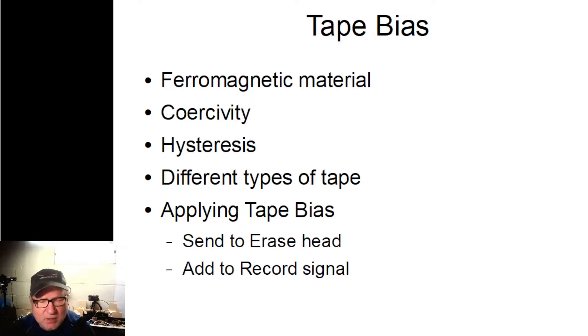First, ferromagnetic material. Recording tape is made up of multiple layers and one of the layers, the topmost layer, is made of ferromagnetic material and all that means is this material can be magnetized and demagnetized. Typically these materials are made out of iron, nickel, chromium or cobalt alloys. The magnitude or measure of the field strength needed to magnetize or demagnetize is called the coercivity of the material.